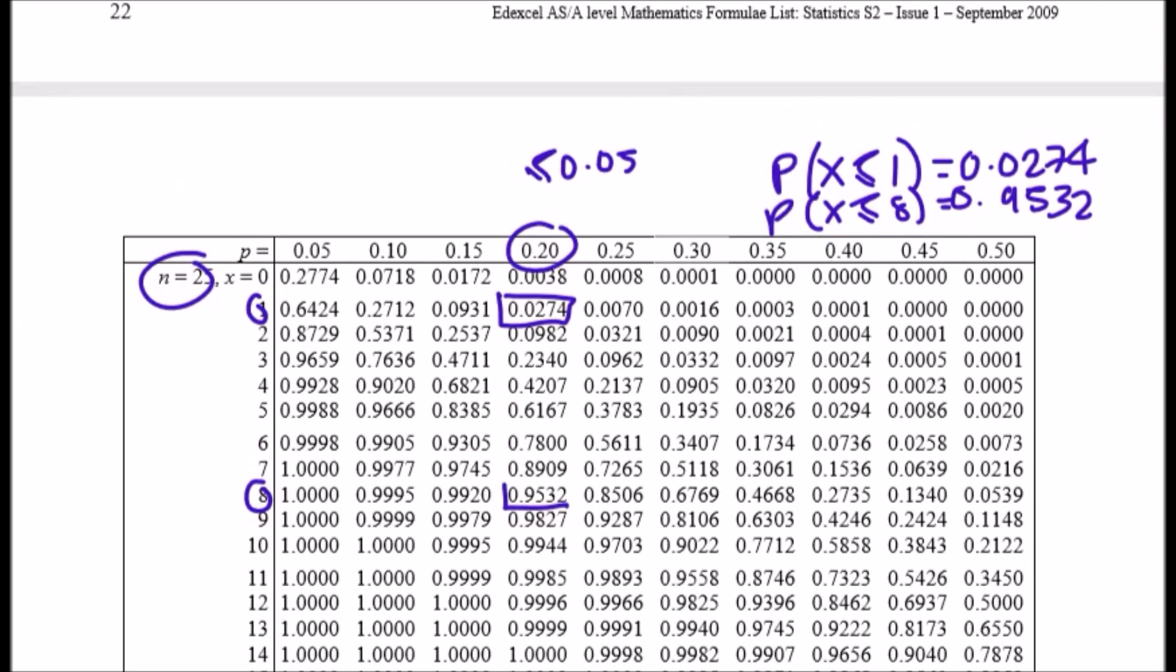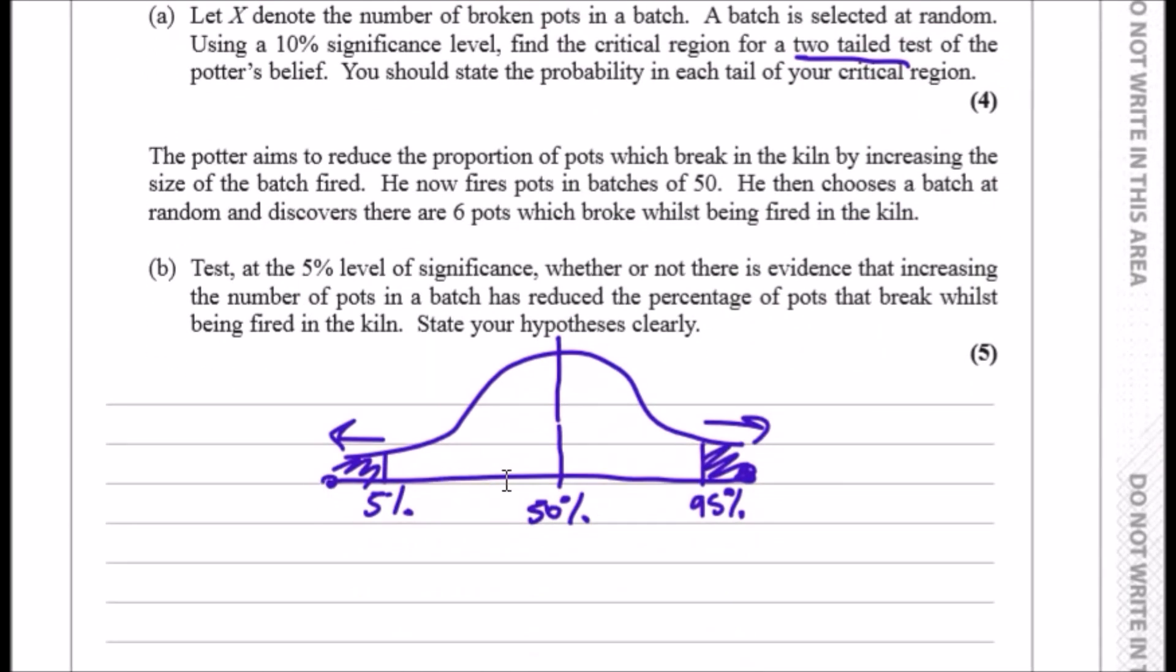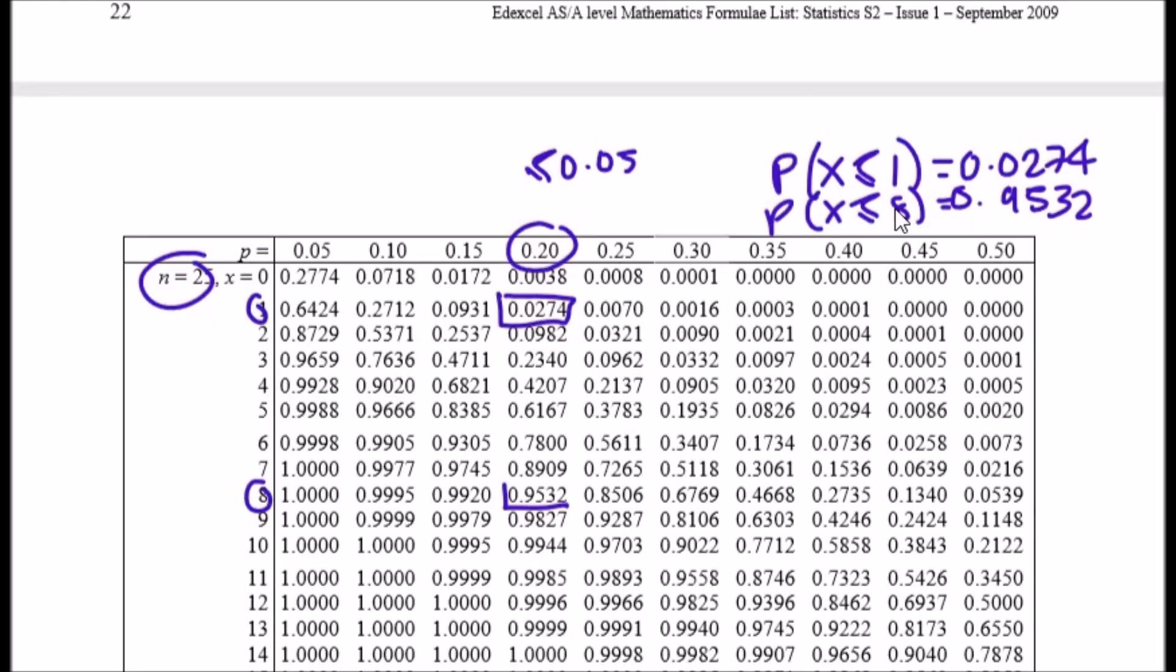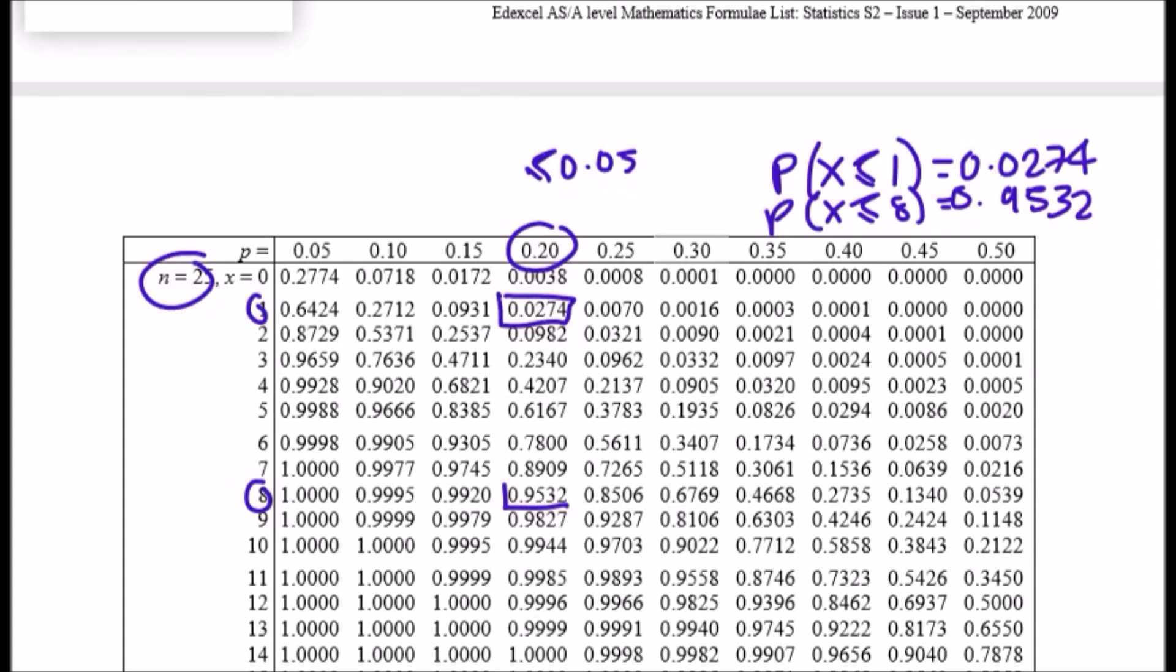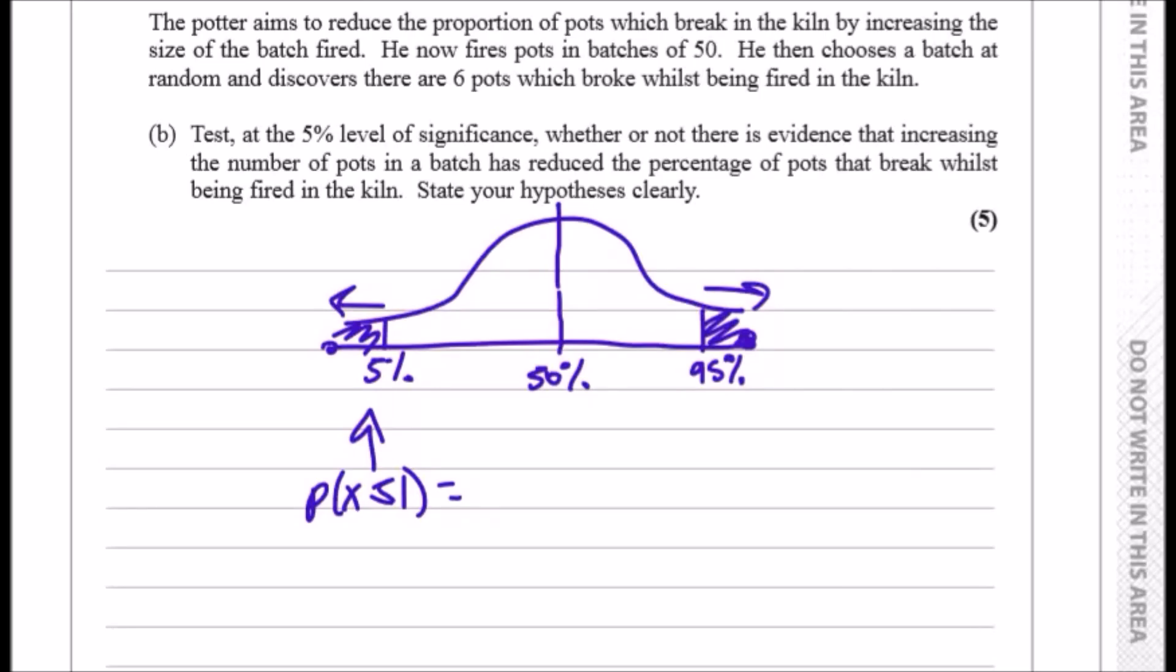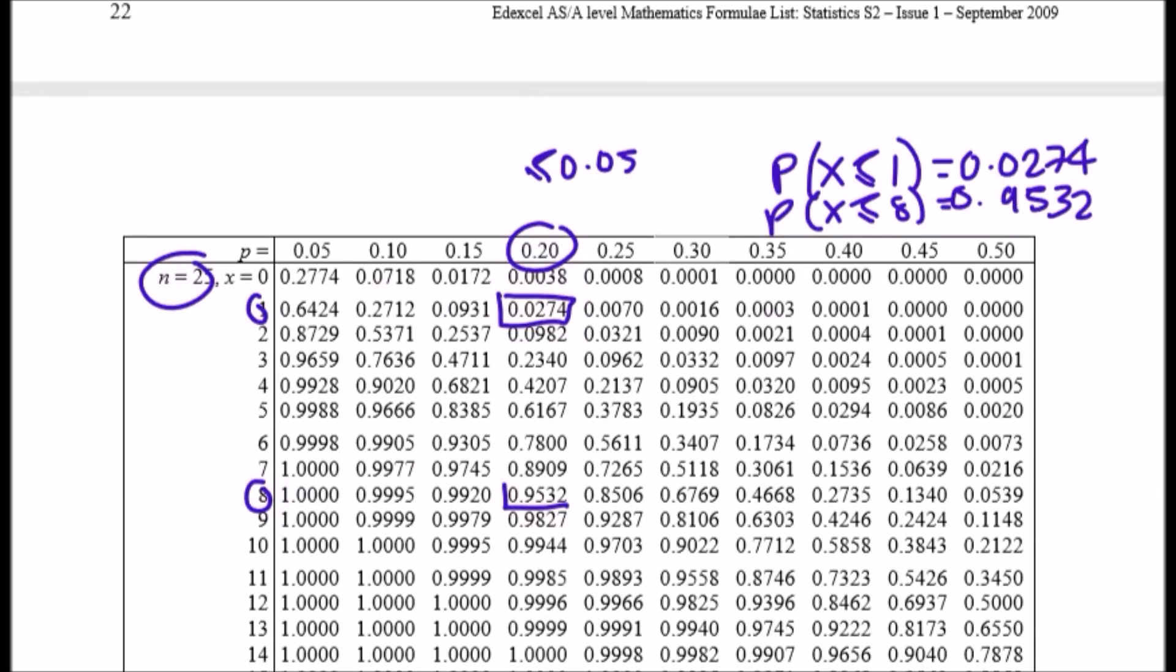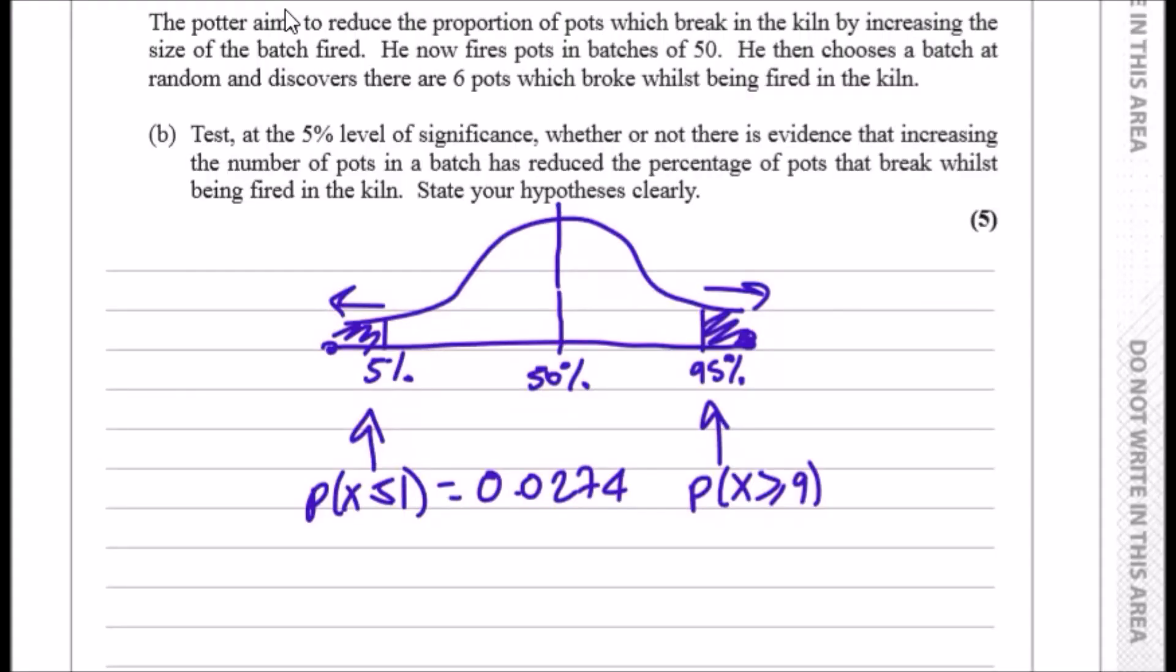Plotting this down on the curve: it says less than or equal, but we want the greater than or equal version. So we just do 1 minus this term and switch to 9, because this goes up to 8 and we want 9 onwards. At the lower tail, this is probability x is less than or equal to 1 with exact probability 0.0274. At the upper tail, this is probability x greater than or equal to 9, which is 1 minus 0.9532, equals 0.0468.